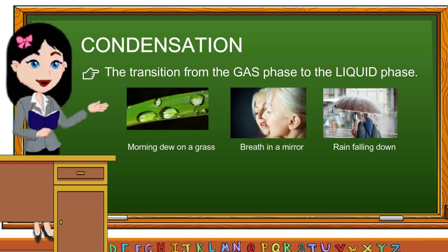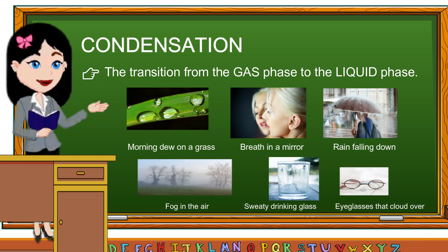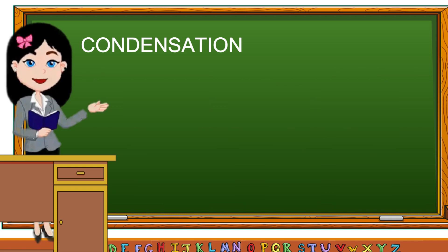Morning dew on the grass, breath in the mirror, rain falling down, fog in the air, sweaty drinking glass, eyeglasses that cloud over, steamy bathroom mirror, and visible breath in cold conditions are some common condensation examples.